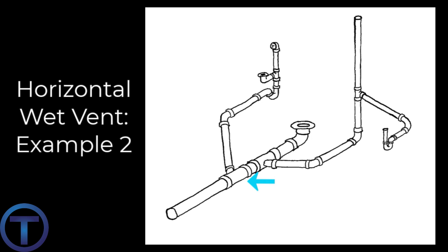...to the three-by-two wye where the tub branches off is all considered horizontal wet vents. This provides air to each of those fixtures involved with this bathroom group.